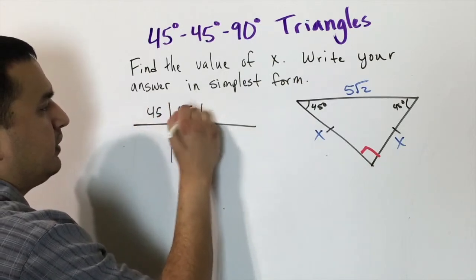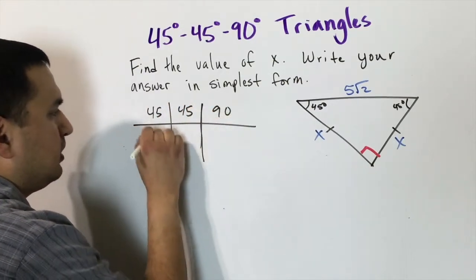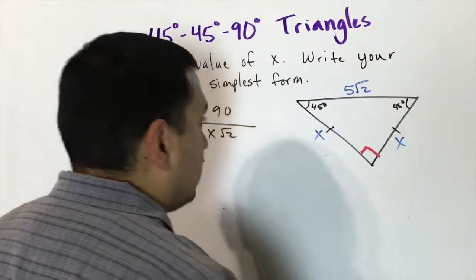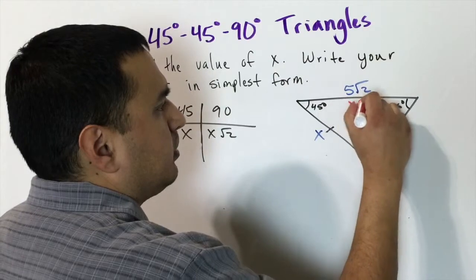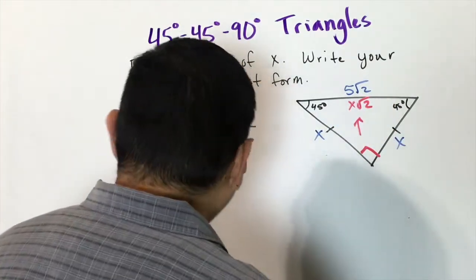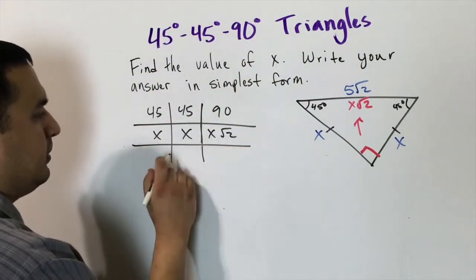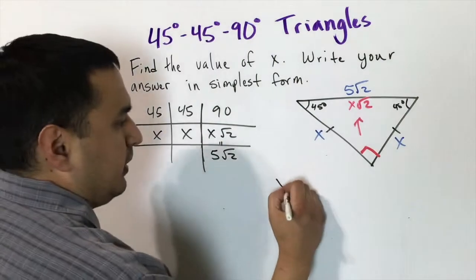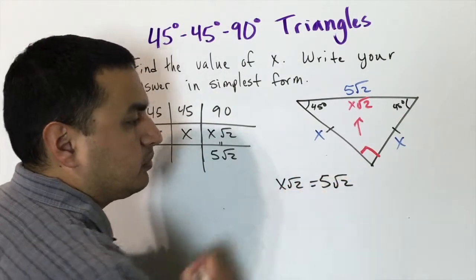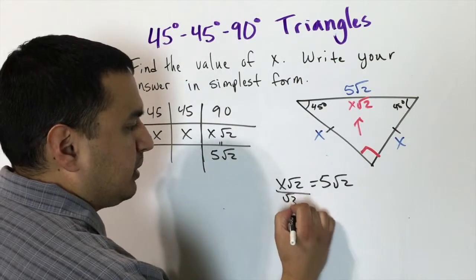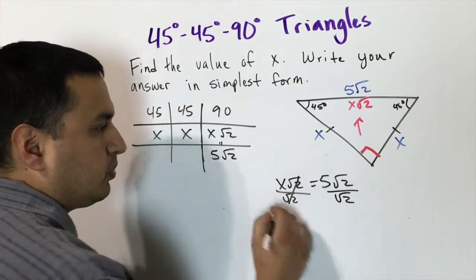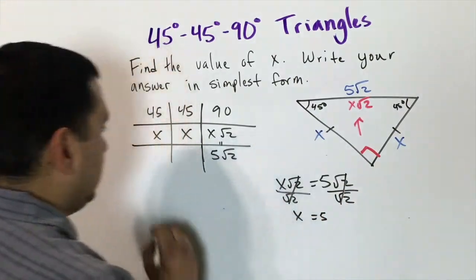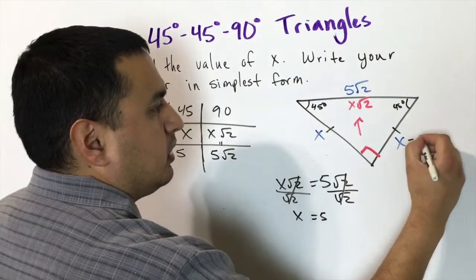We can make a table with 45, 45, and 90, using x, x, and x√2. The side across the right angle is x√2. Since we're given 5√2 for that side, we set x√2 = 5√2. Dividing both sides by √2, those cancel, and x equals 5. So the side lengths are both 5.